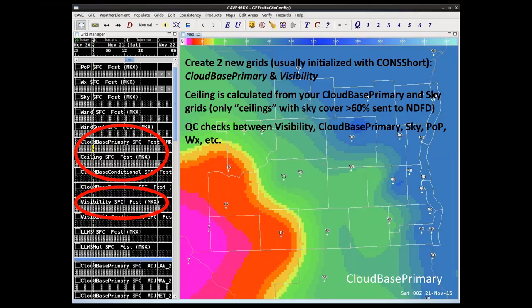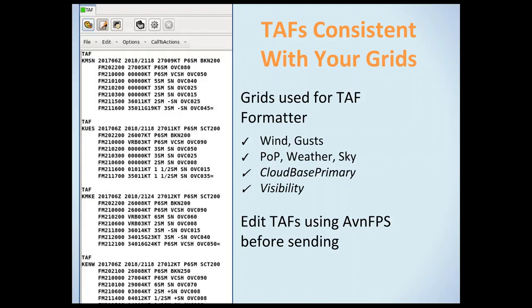You'll also get a TAF formatter. At first glance it looks like an overload of TAF lines, but I've found it's easier to remove lines than add lines, so while it might look daunting, it's not too bad to edit in AVNFPS before you send it. Bottom line: our TAFs are now consistent with our grids. It gives you a really good starting point where your winds are already loaded into your TAF lines for your task groups, along with your major ceiling changes.